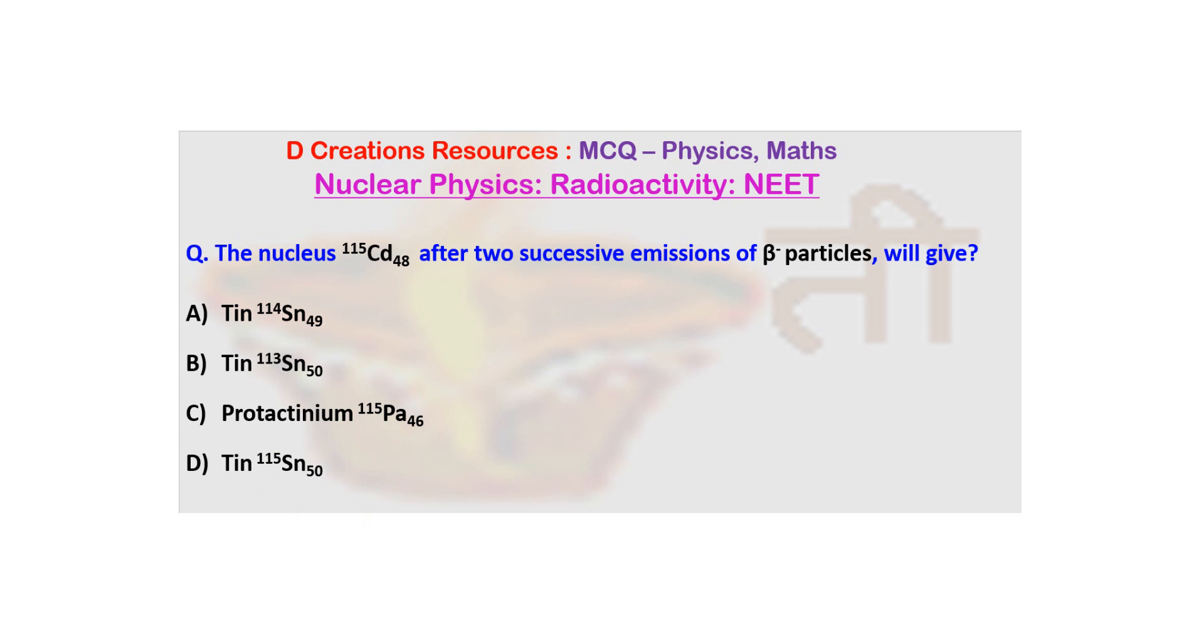So we have done a similar question about alpha decay. Now this is about beta decay, and you know that in beta decay there is beta plus as well as beta minus decay. These numbers, like for example 115 here, represent the mass number, while this number here 48 represents the atomic number. Mass number is total number of protons and neutrons, while atomic number is number of protons or electrons.